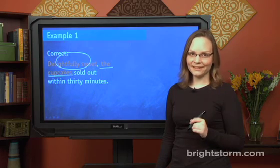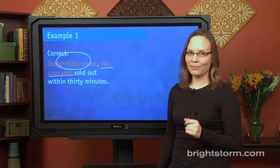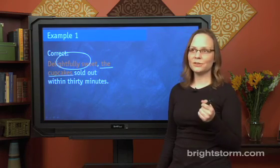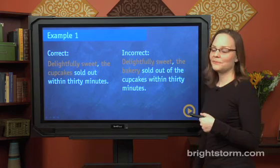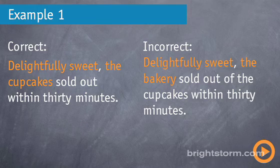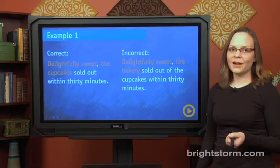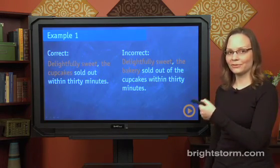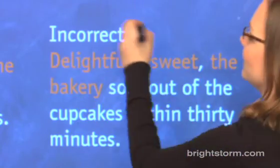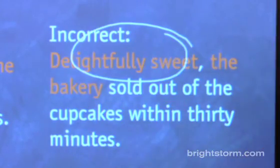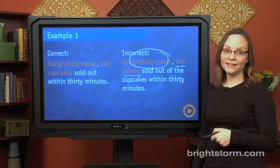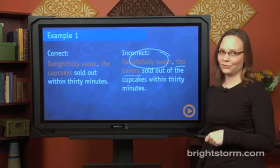But we can have a very similar sentence that uses modifiers improperly. Here's what a wrong answer choice on the SAT would look like: 'Delightfully sweet, the bakery sold out of cupcakes within 30 minutes.' This might sound okay to your ear, but in SAT land it's not okay. The modifier is still 'delightfully sweet,' and that modifier describes the noun that follows — the bakery. As you can imagine, the bakery is not delightfully sweet, so this would be a wrong answer choice on the SAT.